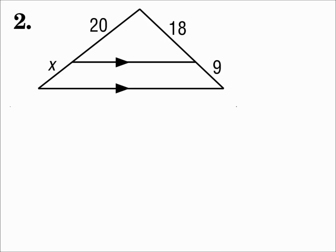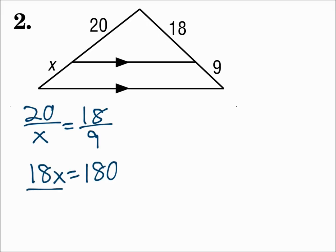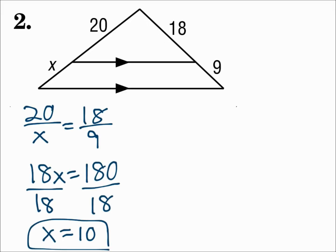Number 2. The parallel segment in the middle of the triangle cuts the other two sides proportionally. Set up your proportion with the values sitting the same way that they sit in the picture: 20 over x equals 18 over 9. Solve the proportion by cross multiplying, and x is 10. Remember, when the segment in the middle is parallel to one of the sides, the other two sides are cut into proportional parts.